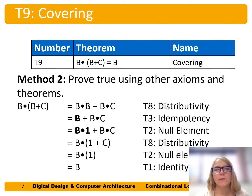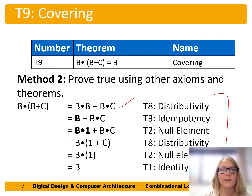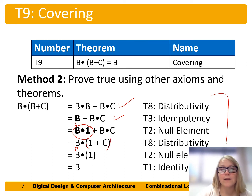Here is another way to prove this theorem using other axioms and theorems — there are often many methods to show the same thing. We again use distributivity, then idempotency, but instead of covering, we use the null element theorem where B equals B·1. Then factoring out B using distributivity, we get B·(1 or C). By the null element, 1 or anything is just 1, and B·1 using identity is just B.